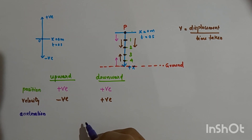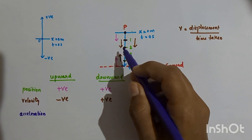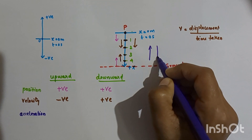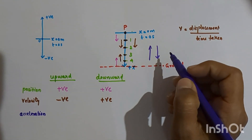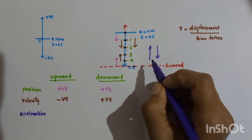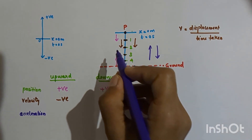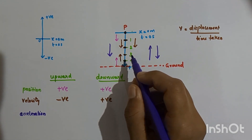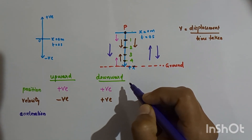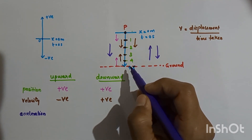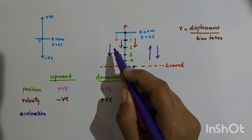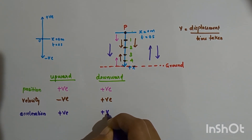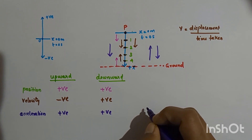Regarding acceleration: whether the ball moves upward or downward, its acceleration equals the acceleration due to gravity, which is always in the vertically downward direction. Vertically downward is along the positive x-direction. So acceleration is positive during both upward and downward motion of the ball.